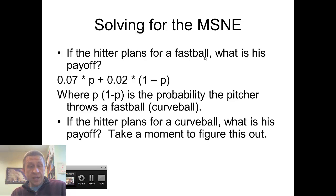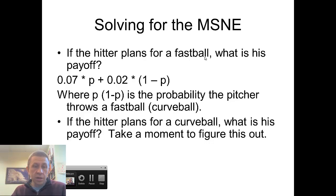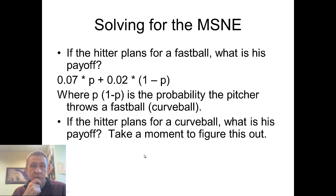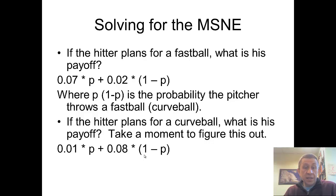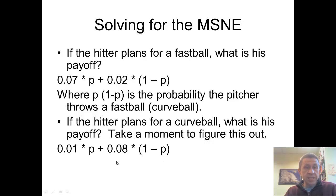If the hitter plans for a curveball, what is the hitter's payoff? I'd like you to pause this and try to work out those numbers on your own before we continue. If the hitter plans for a curveball, when the pitcher throws a fastball — which occurs with probability P — only 1% of the time does the hitter get on base. But if the pitcher throws a curveball, the hitter gets on base 8% of the time. So these two equations represent the expected value for the hitter when planning for a fastball and when planning for a curveball.